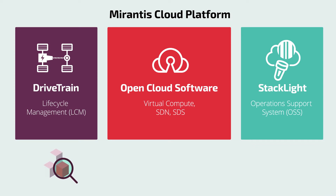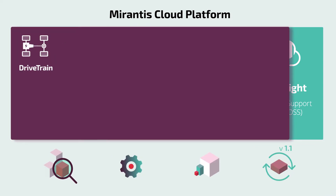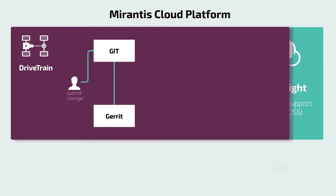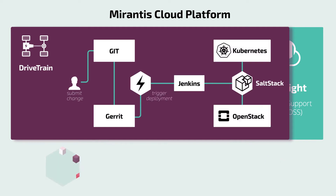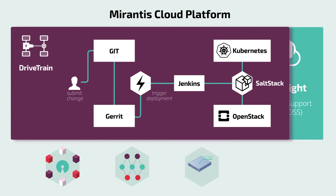MCP clouds are configured, deployed, scaled, and updated with Drivetrain, a continuous integration and delivery infrastructure-as-code toolchain that consumes Mirantis-tested and curated open-source software and public open-source updates, adjusts a template model of the target cloud and uses it to resolve dependencies, and deploys updates on staging nodes for QA test, and then, all tests passed,